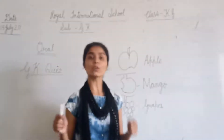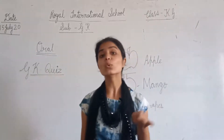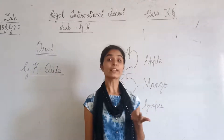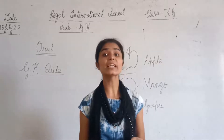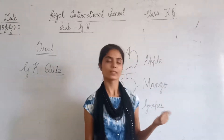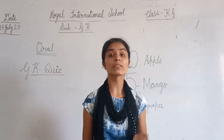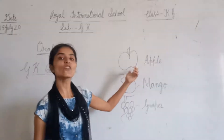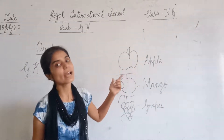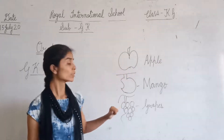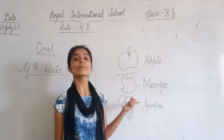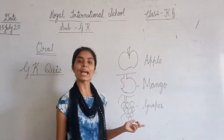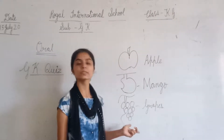Now we repeat all the questions. What is your school name? My school name is Royal International School. In which class do you read? I read in KG class. Where do you live? I live in Jaipur. What is the color of apple? Color of apple is red. What is the color of mango? Color of mango is yellow. Color of grapes? Green.